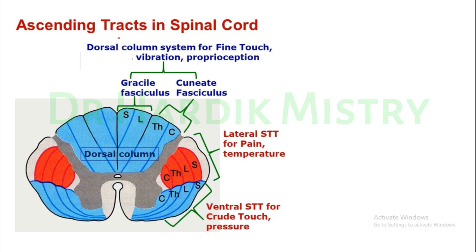I am giving you a rough idea about the sensory tracts in the spinal cord: the dorsal column system, spinothalamic tract, and spinocerebellar tract. The dorsal column system, also called the dorsal column medial lemniscus system, is for fine touch, which includes tactile localization, tactile discrimination, vibration sensation, and proprioception. These fibers run in the gracile fasciculus and cuneate fasciculus on the dorsal side of the spinal cord.